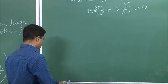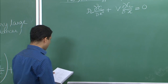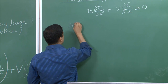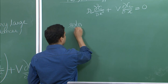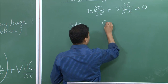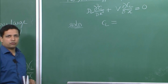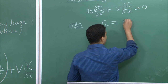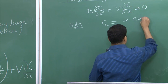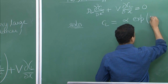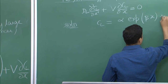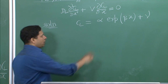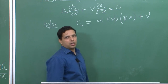The standard solution for this equation is of the form C_L as a function of x: C_L equals α times exp(βx) plus γ. This is the standard solution for equations of this form, where α, β, and γ are constant values.